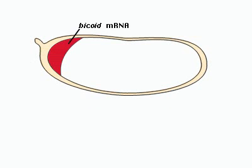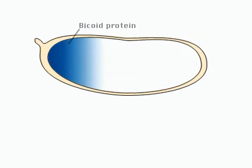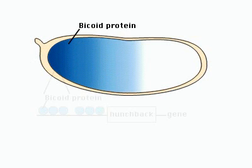Maternal mRNAs, such as Bicoid, are required for early patterning. Bicoid mRNA is localized to the anterior pole. Once synthesized, Bicoid protein diffuses posteriorly,